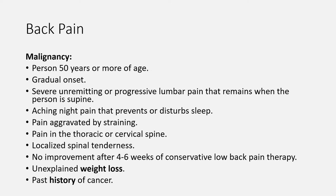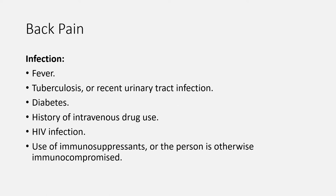Red flag symptoms and signs of malignancy include: person 50 years or more of age, gradual onset of symptoms, severe unremitting or progressive lumbar pain that remains when the person is supine, aching night pain that prevents or disturbs sleep, pain aggravated by straining, pain in the thoracic or cervical spine, localised spinal tenderness, no symptomatic improvement after four to six weeks of conservative therapy, unexplained weight loss, and past history of cancer. Red flag symptoms and signs of infection include: fever, tuberculosis, recent urinary tract infection, diabetes, history of intravenous drug use, HIV infection, use of immunosuppressants, or the person is otherwise immunocompromised.